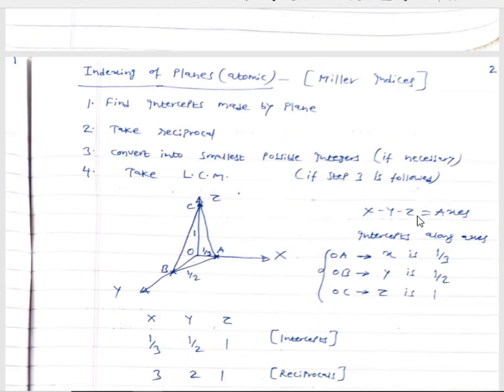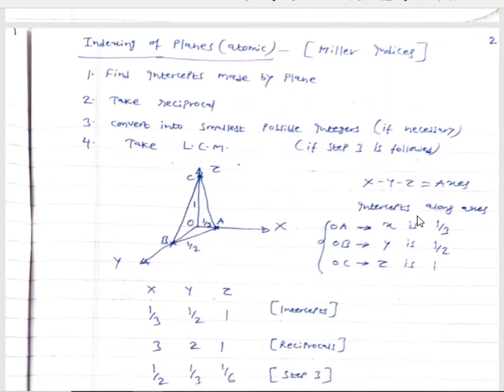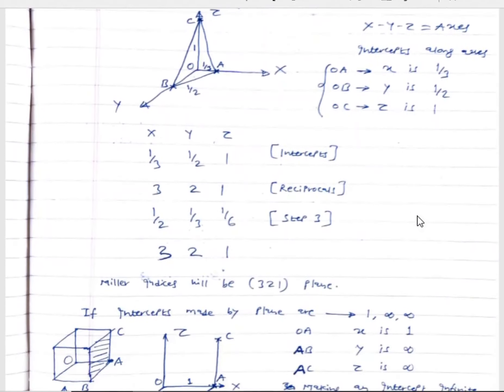In the next step, take the reciprocal of the intercepts. The reciprocal of 1/3, 1/2, and 1 gives 3, 2, and 1. In step 3, convert these into the smallest possible integers. The smallest possible integers for 3, 2, 1 can be expressed as 1/2, 1/3, and 1/6. Taking the LCM — which is 6 — and multiplying gives 3, 2, 1. So 3, 2, 1 are the Miller indices of the plane.